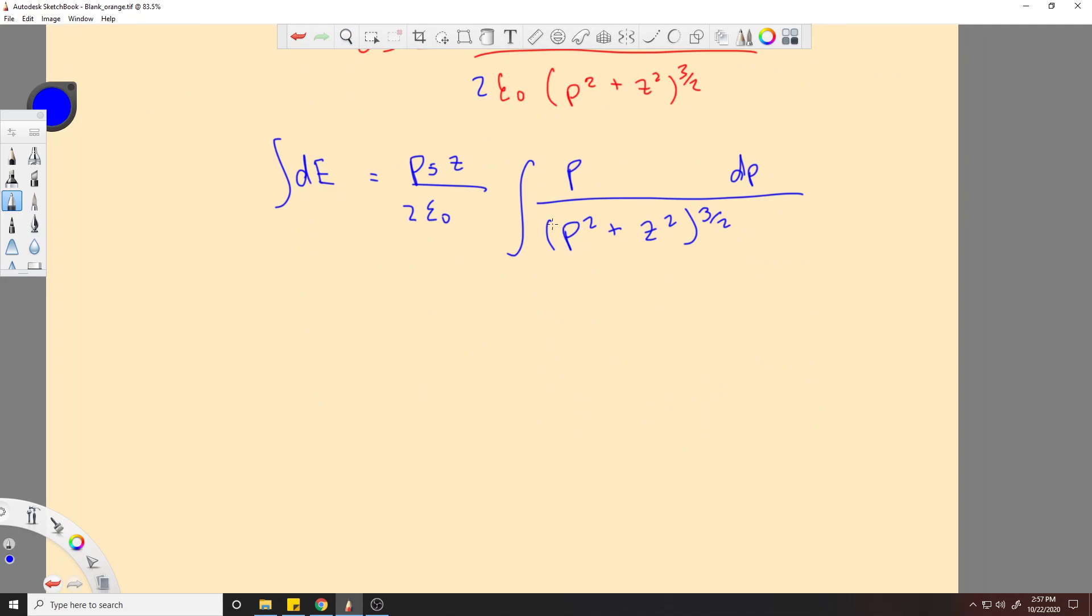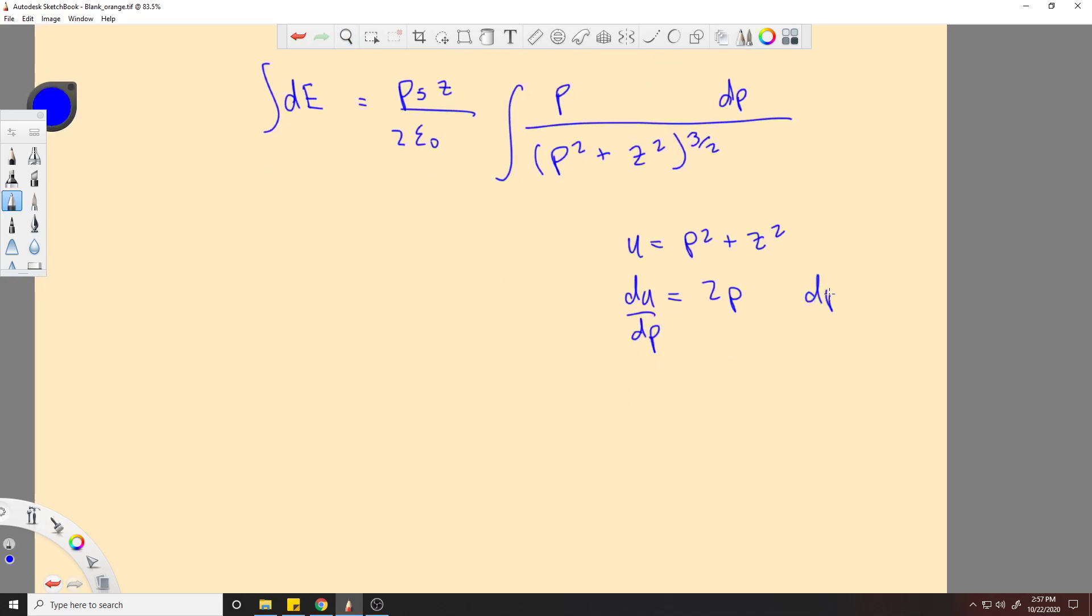Okay, now, the way I like to do these is I like to use u substitution. So I will say u is equal to rho squared plus z squared. du would be 2 rho with respect to d rho. So that would mean d rho would be 1 over 2 rho du.